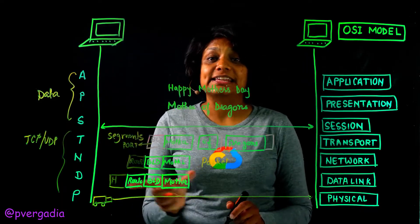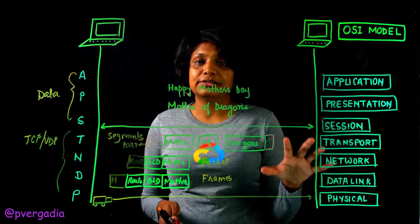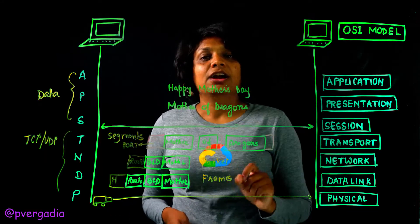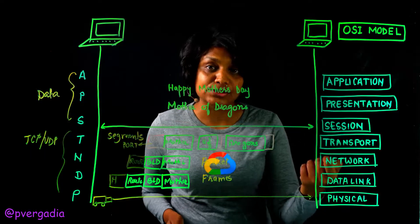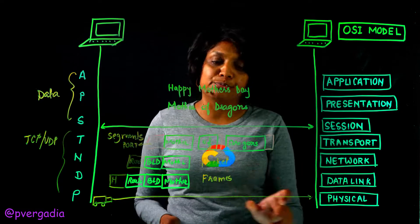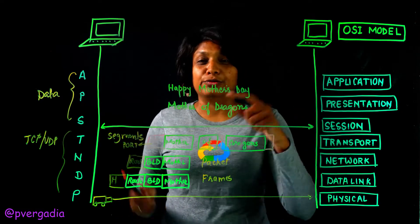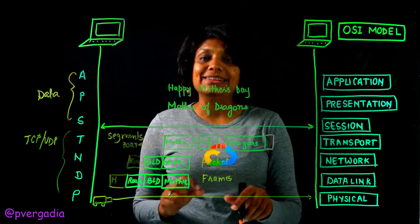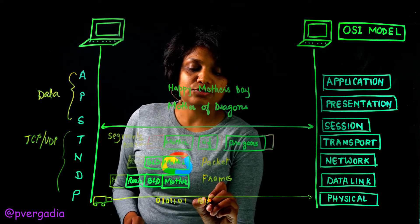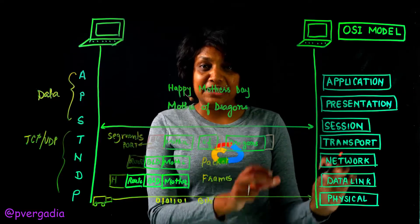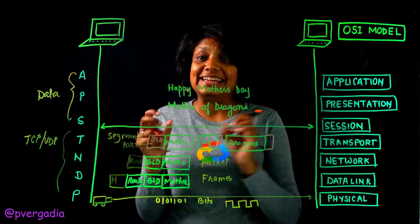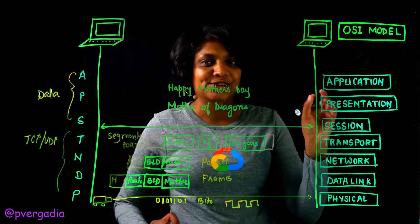At the Data Link layer, the packet gets converted into frames with additional information — just like giving a house number in our analogy. This additional information ensures that delivery at the other end to the server is error-free and in sequence, so 'Mother' arrives before 'of' before 'Dragons.' Finally, the Physical layer converts frames into actual bits — zeros and ones — and transfers them over electrical signals across the network.